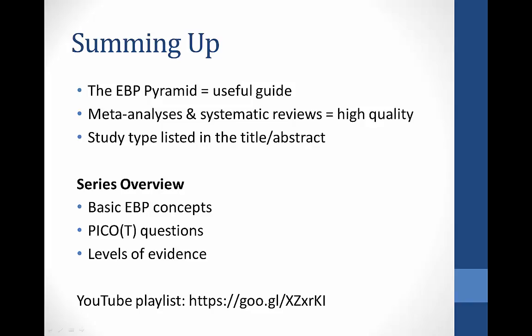Many students are given research assignments where they're required to locate high level research evidence. The evidence-based practice pyramid can help narrow down the search. The two types of studies you want to focus on are meta-analyses and systematic reviews. Thankfully, most of the major health sciences databases have limiters for these study types. To determine the study type you usually just need to read the title or look in the abstract. After watching the three videos in this series you should be able to identify basic concepts related to evidence-based practice in healthcare, use PICO to build an amazing research question, and know how to find high-level research. For more details on how to search each of the resources covered, you can go to my YouTube Health Sciences Research Playlist.